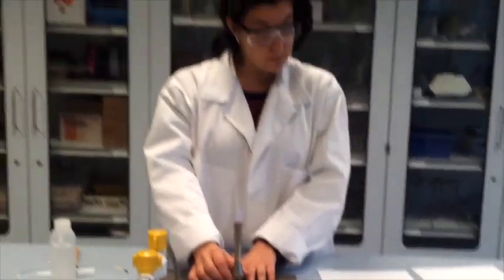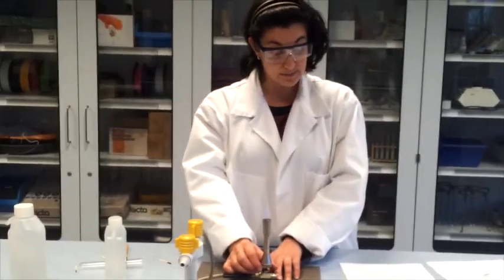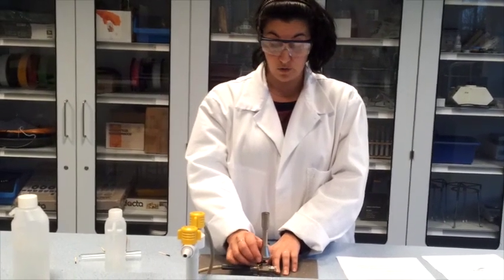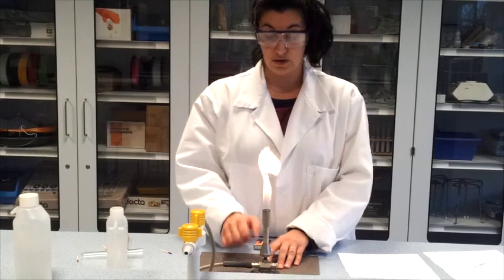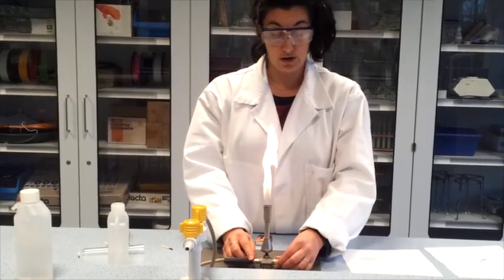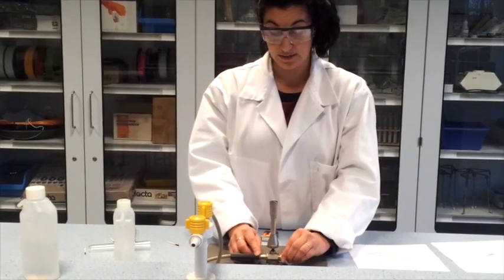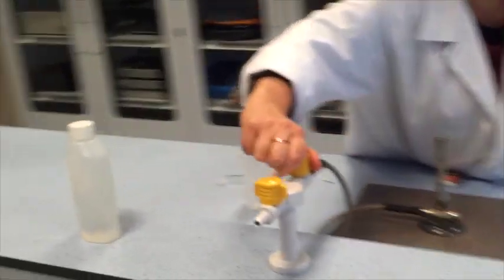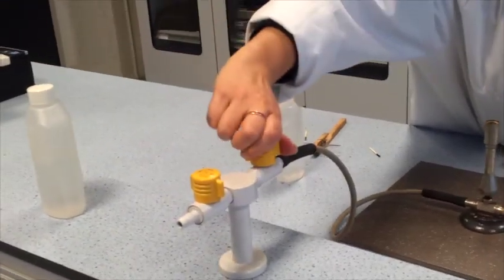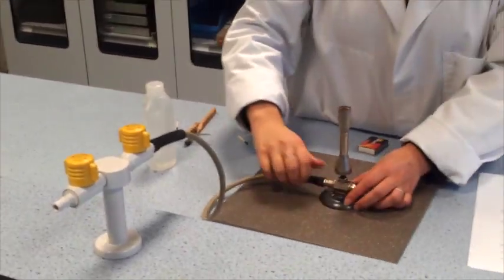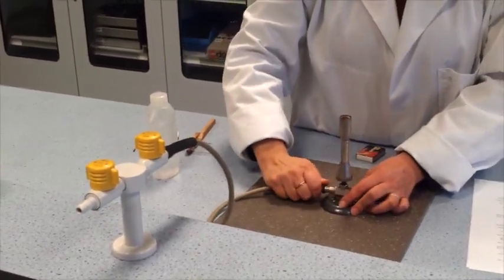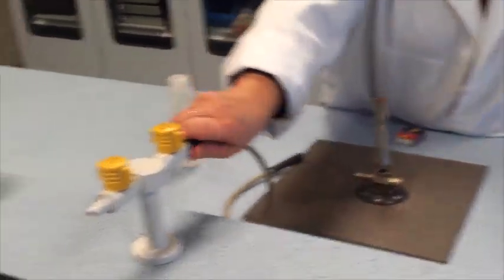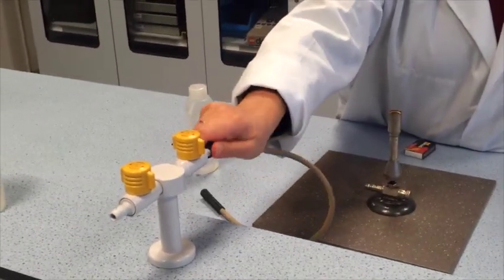To switch the burner off, go through the same steps in opposite order. We close the air hole. There is our safety flame again. Then we close the gas. We close the main tap by turning to the right, and we detach the rubber tubing from the burner in a turning motion and from the main valve.